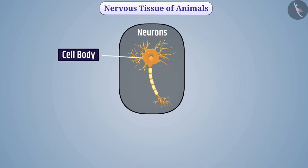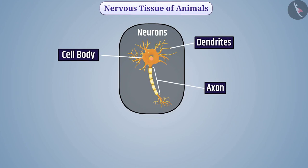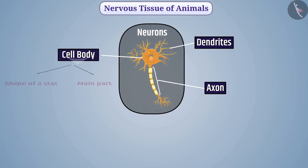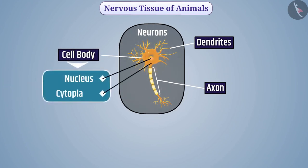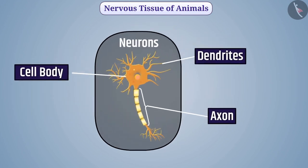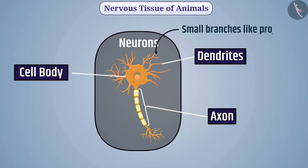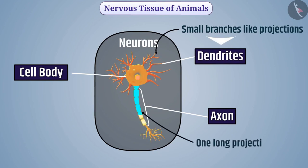Neuron is made up of cell body, dendrites, and axon. The cell body is star-shaped and is the main part of the neuron, which contains nucleus and cytoplasm. From the cell body of each neuron, small branches like projections called dendrites arise, and one long projection, i.e., the axon, also arises.